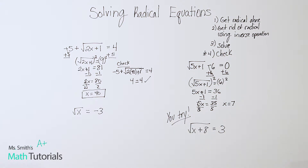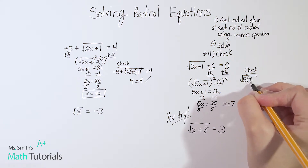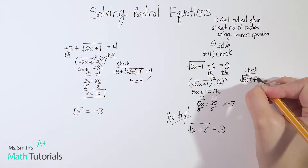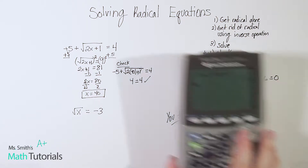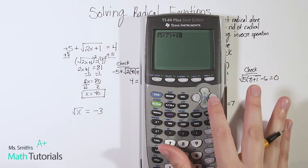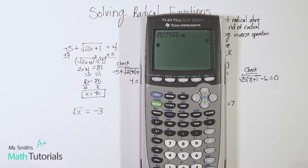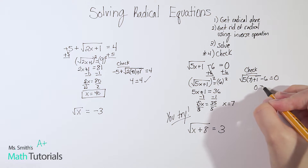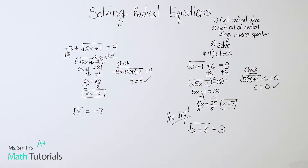Now before I confirm or circle that answer and keep moving, I have to take the time to check. Let's see if this really does work out. So square root of five times seven — because we're not going to put x, we're going to put seven — plus one, make sure that's underneath the radical, minus six. And we're going to see, does that equal zero? Square root of five times seven plus one, minus six — does it equal zero? Sure does. So zero does equal zero, it checks. So x equals seven; that is a true solution.